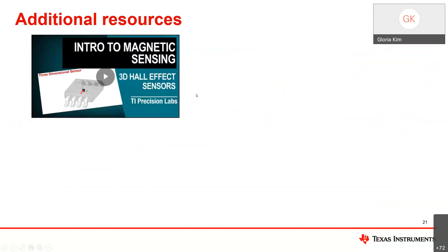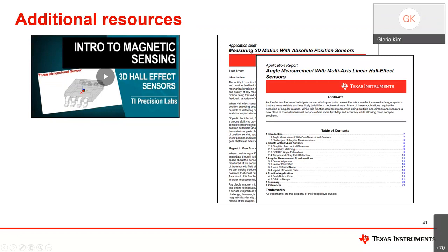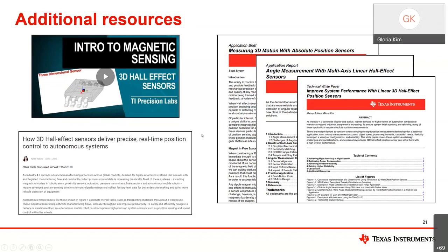Additional content is available on the TMAG 5170 product page. There is a series of TI Precision Labs videos ranging from introduction-level material to design considerations for all magnetic hall position sensors, with a good amount focused on 3D linear hall effect sensors. Several application papers discuss design considerations for the various applications the 3D hall sensor can be used in. Most recently, a white paper and technical article were added discussing key features and benefits of the TMAG 5170 and its suitability for evolving markets such as Industry 4.0.